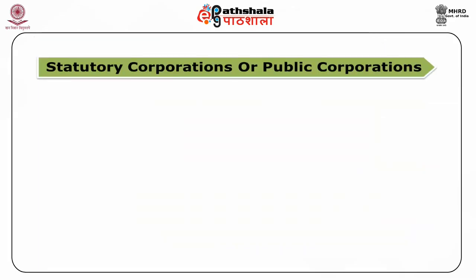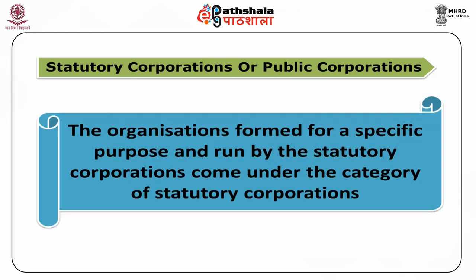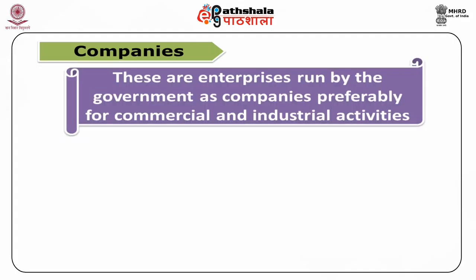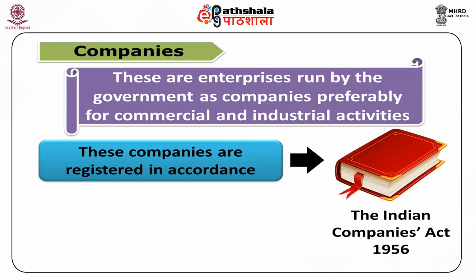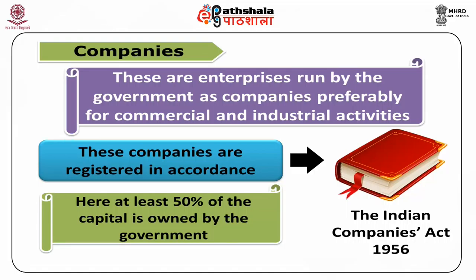Third, Statutory Corporations or Public Corporations: the organisations formed for a specific purpose and run by statutory corporations come under the category of Statutory Corporations, like Life Insurance Corporation of India, Indian Airlines, SEBI, Food Corporation of India, etc. Fourth, Companies: these are enterprises run by the government as companies, preferably for commercial and industrial activities. These companies are registered in accordance with the Indian Companies Act 1956. Here, at least 50% of the capital is owned by the government. Hindustan Machine Tools Limited, NTPC Limited, etc., are examples of companies.